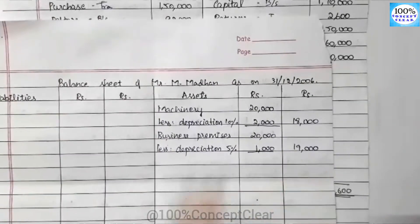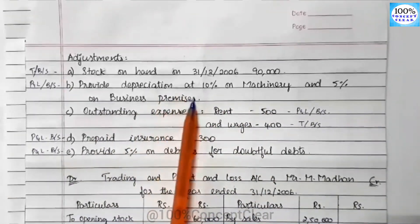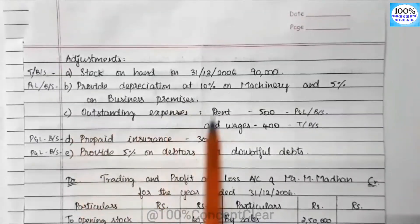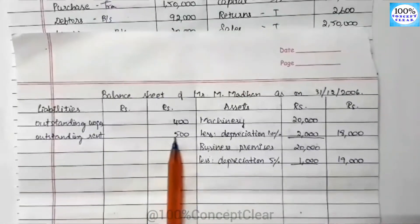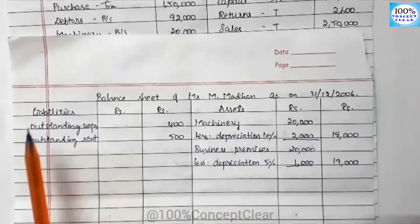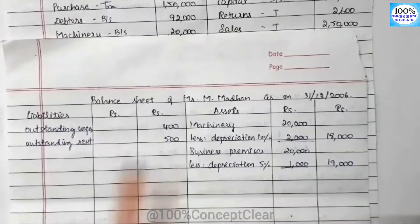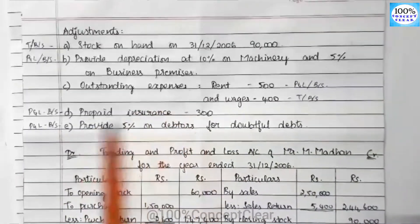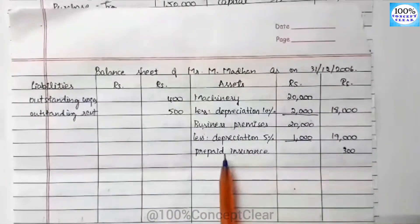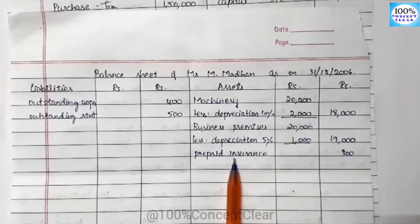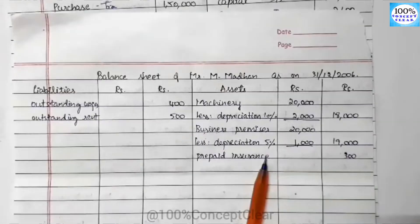Next, outstanding expenses: outstanding wages is $400 and outstanding rent is $500. Outstanding expenses are on the liabilities side of the Balance Sheet. Next, prepaid insurance is $300 — prepaid expenses are assets in the Balance Sheet. So outstanding expenses are on the liability side and prepaid expenses are on the asset side.